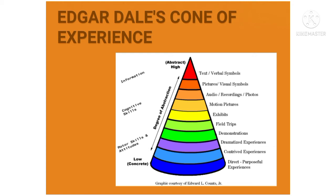Another level would be study trips. This level extends the learning experience through excursions and visits to different places not available inside the classroom, extending learning into a more complex environment. The level of study trips is followed by exhibits, which are a combination of some of the first levels in the cone — specifically a combination of several mock-ups and models. Most of the time exhibits are visual-only experiences, but some exhibits include sensory experiences related to direct purposeful experiences. In this level, meanings and ideas are presented to learners in a more abstract manner.